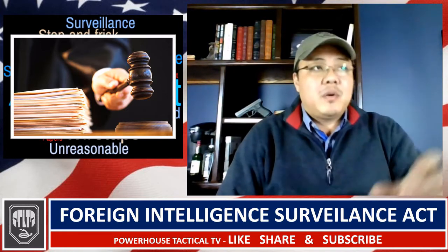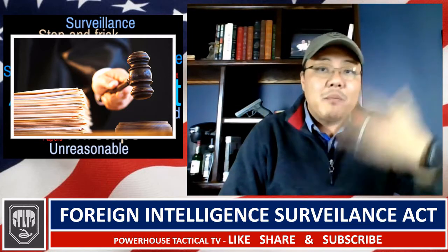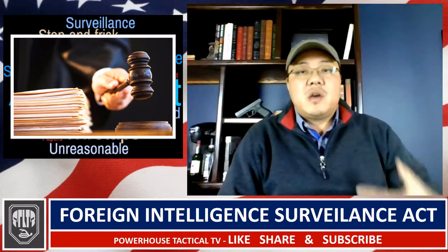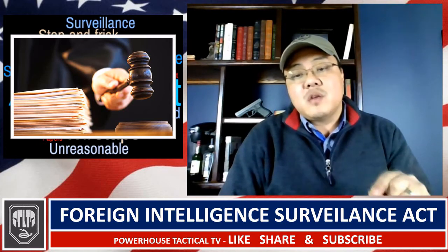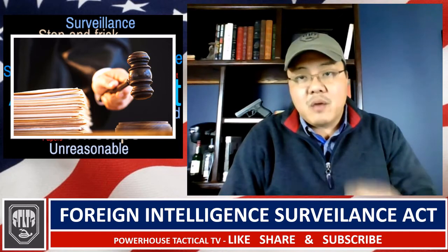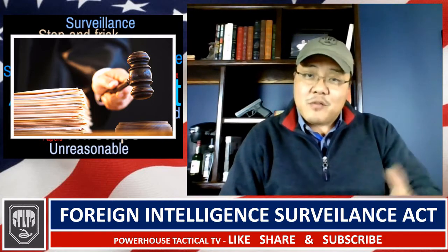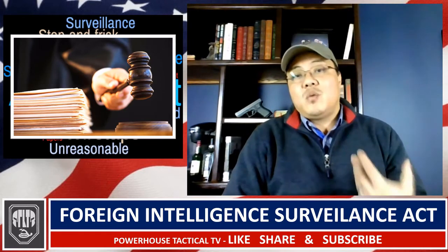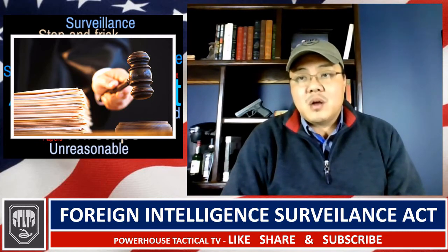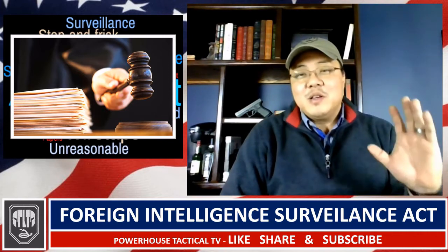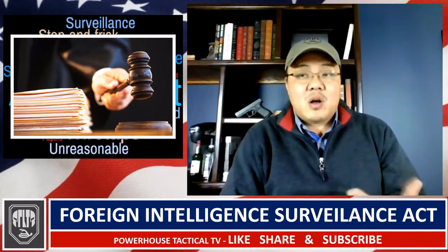FISA establishes probable cause of foreign agency as the standard — any foreign agency like a foreign company or foreign intelligence agency, for example a Russian embassy in Washington DC or a Chinese consulate general's office in Chicago. These foreign agencies can be surveilled. However, over time that morphed into a probable cause of foreign personhood — so if you're a foreign national in this country, FISA warrants can be applied for and will pretty much be approved for government surveillance.